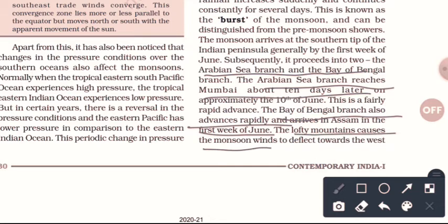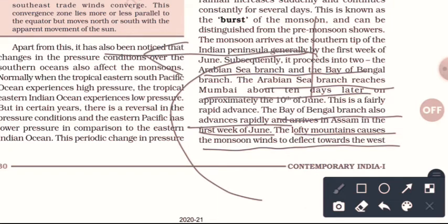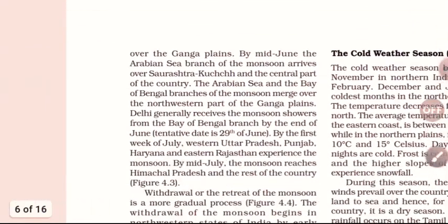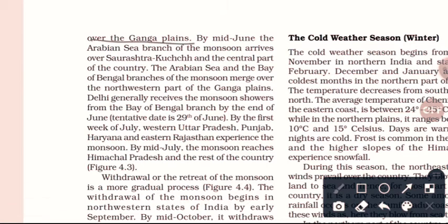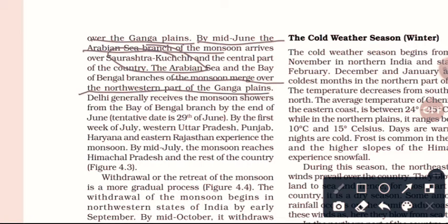The lofty Himalayan mountains cause the monsoon winds to deflect towards the west. Over the Ganga Plains, the Bay of Bengal branch moves from the eastern side towards the west and south. By mid-June, the central part of the country comes under the influence of these two branches.